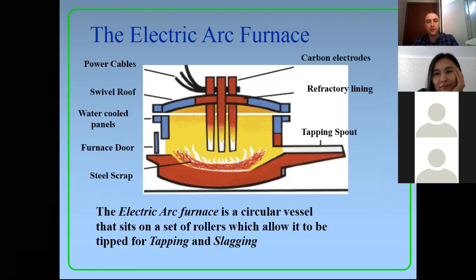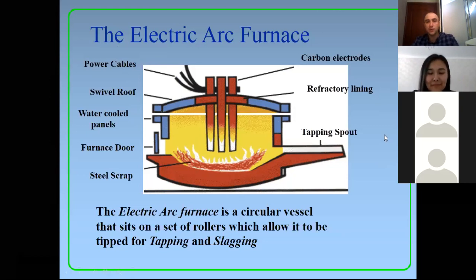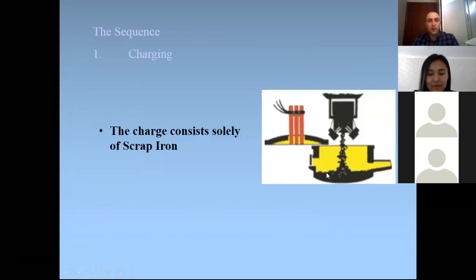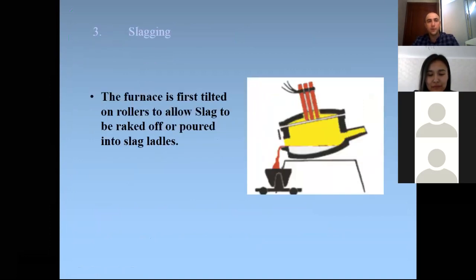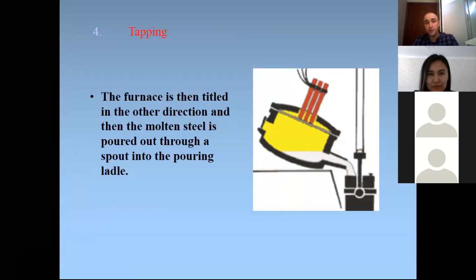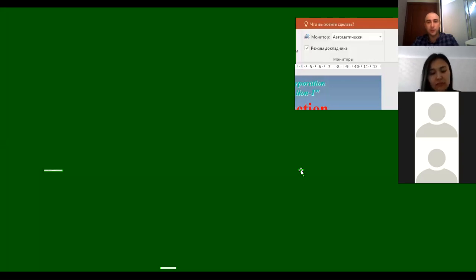The principle scheme of the electric arc furnace consists of several main components: power cables, swivel roof, water-cooled panels, furnace doors, steel scrap, tapping spout, refractory lining, and carbon electrodes. Like in the previous process, there are several stages: charging, melting, slagging, and tapping. If there are questions, we have less than one minute and will continue in the next lecture.